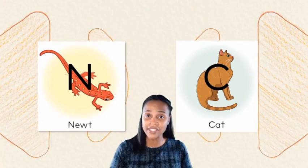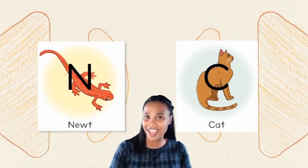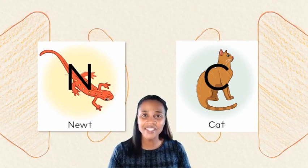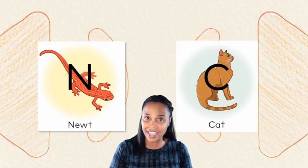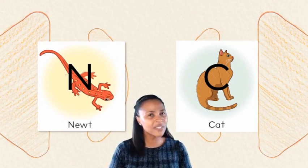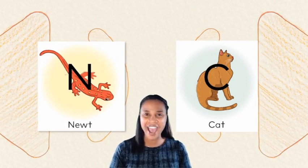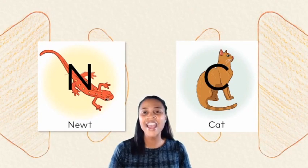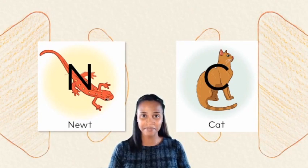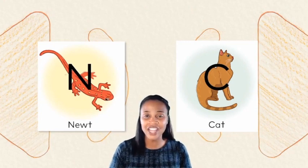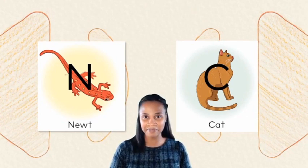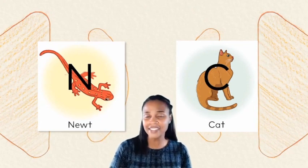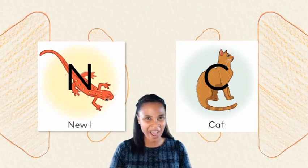Now it's time to say our letter sound chant. Remember those key words we learned yesterday for the letters C and N? We are going to use those key words to help us, because those are the keys to unlocking the sounds we hear. We'll start with the letter N, and I want you to repeat them after me. Ready? N-N-newt. N-N-newt.